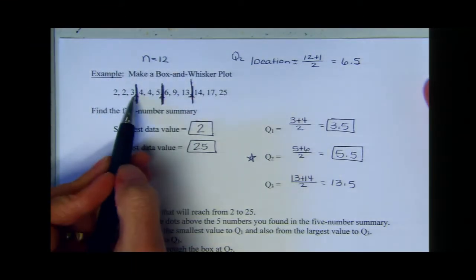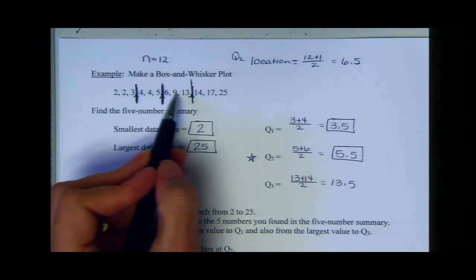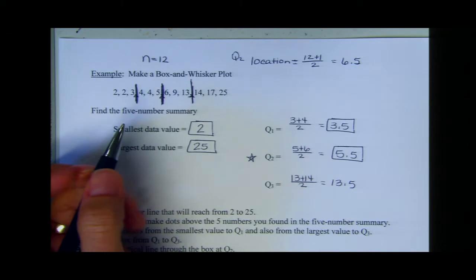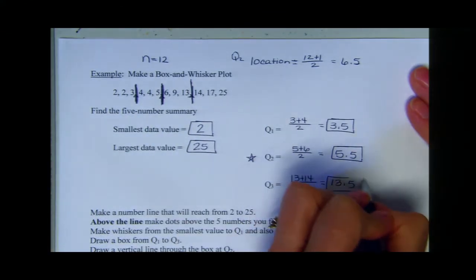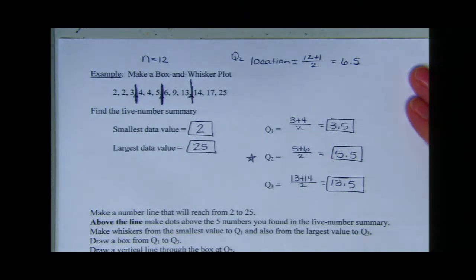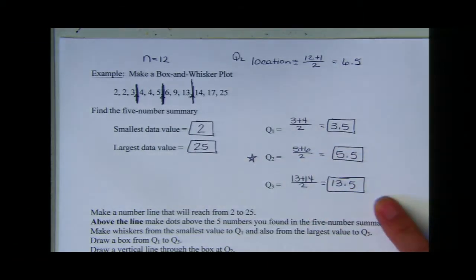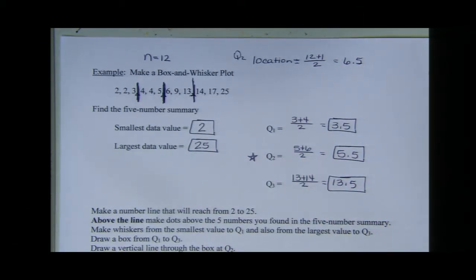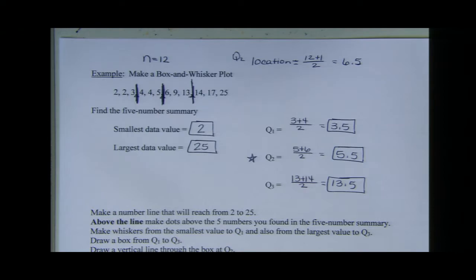Notice the data has four equal parts, each part having three numbers. Here is the five number summary — these five numbers are going to allow us to create the box and whisker plot.